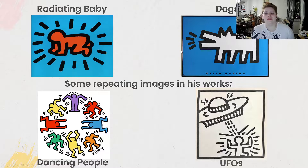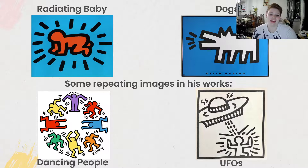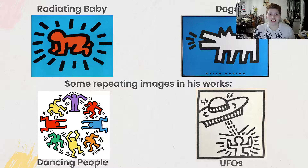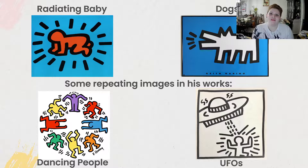Even in the dog pictures, he still includes those rhythmic lines that make it look like the dog is barking. He also really liked doing dancing people — a lot of the examples had people with rhythmic lines on them to make it look like they were just having a great time, jamming, bouncing up and down, dancing everywhere. He also really liked using UFOs — no real reason for it, he just really liked the way they looked and liked having just weird stuff that would grab the attention of any viewer.